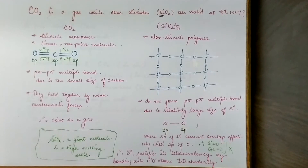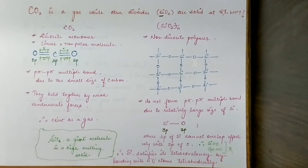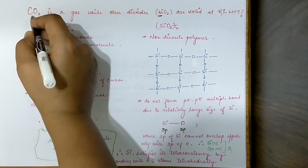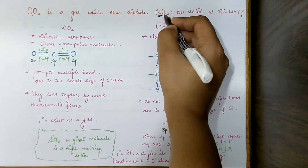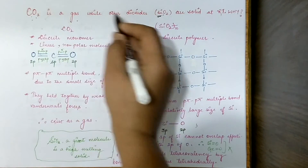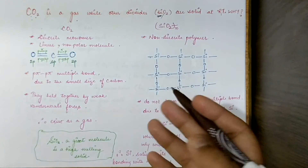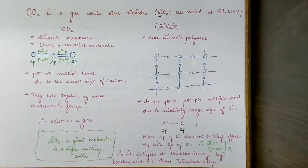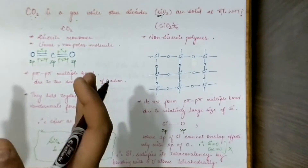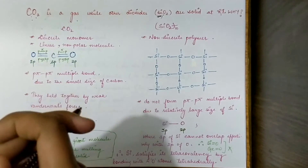Hey everyone, I am Megha and you are welcome to my YouTube channel. In this video I am going to give you an answer to the question: why is carbon dioxide a gas while silicon dioxide is a solid at room temperature? We are talking about elements of the same group, that is group 14 — carbon belongs to group 14 and silicon also belongs to group 14.